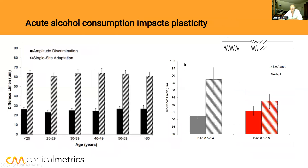Now let's look at acute alcohol consumption. This is where you have a whole bunch of people sitting around drinking, and you take their blood alcohol content. The cutoff seems to be 0.4 — at that level, the amplitude discrimination number and the single-site adaptation number are both pretty normal. But as you drink more and more, accuracy gets worse, the amplitude discrimination number gets bigger, and the single-site adaptation number gets smaller. So the difference between the two — your plasticity score — gets a lot smaller.